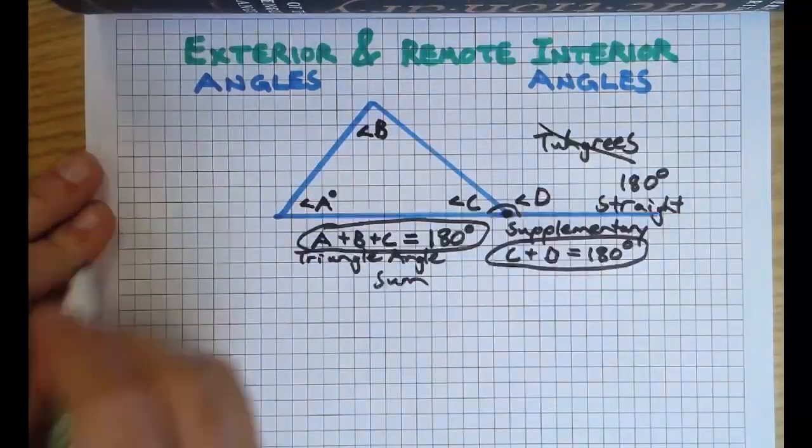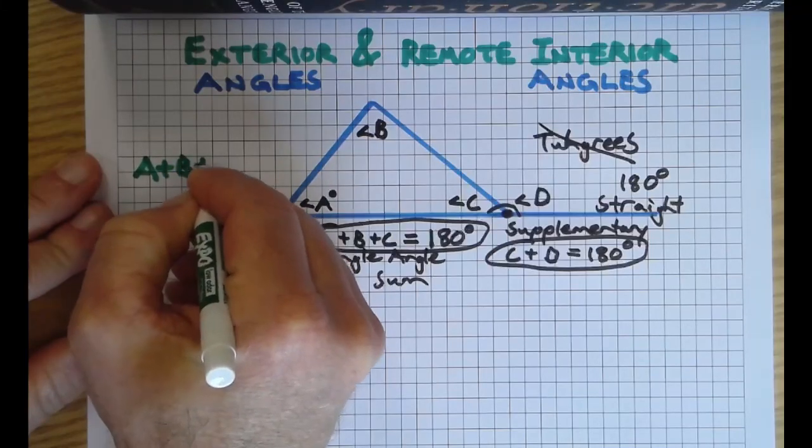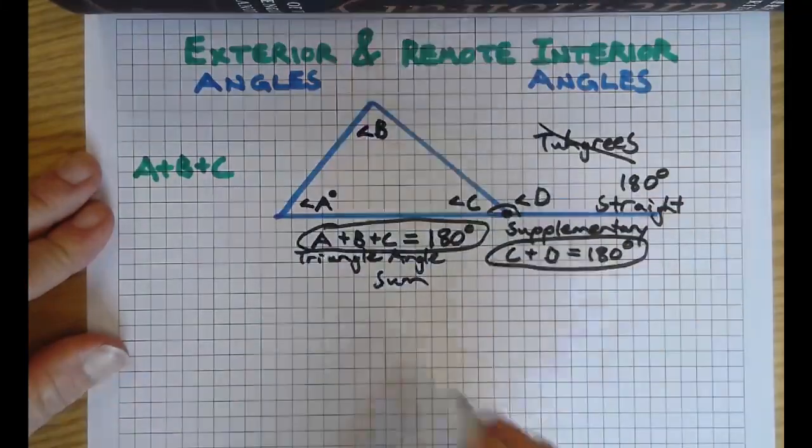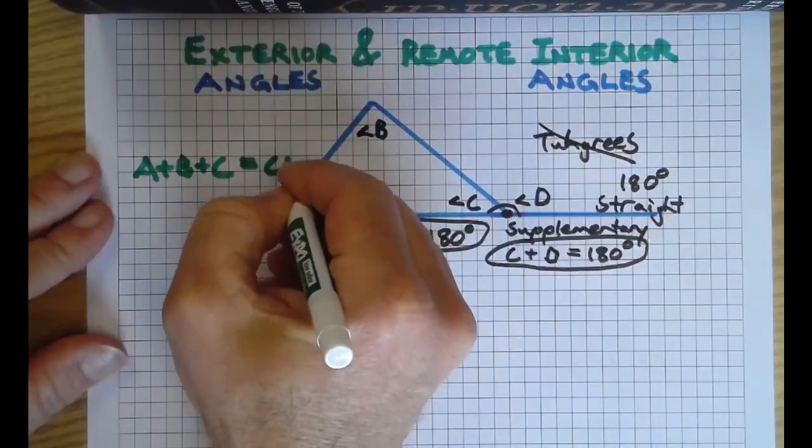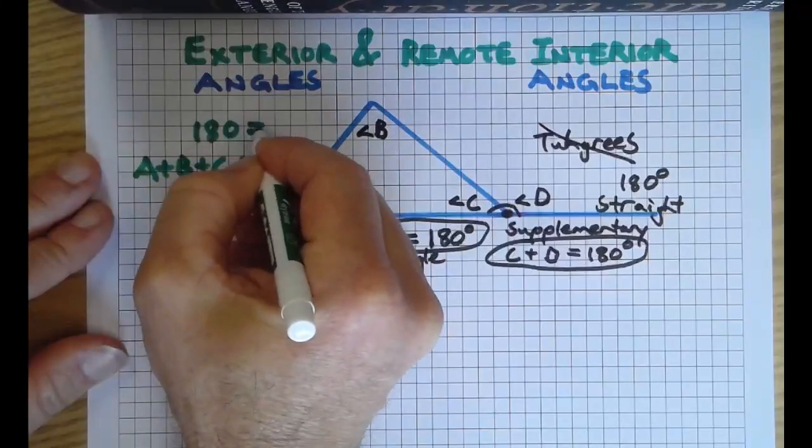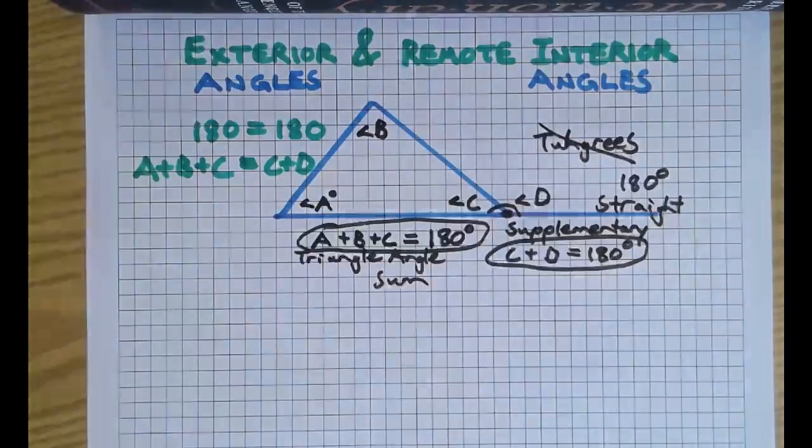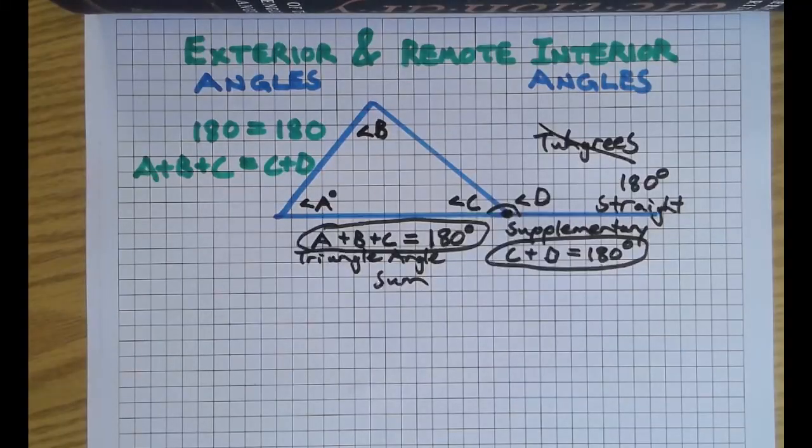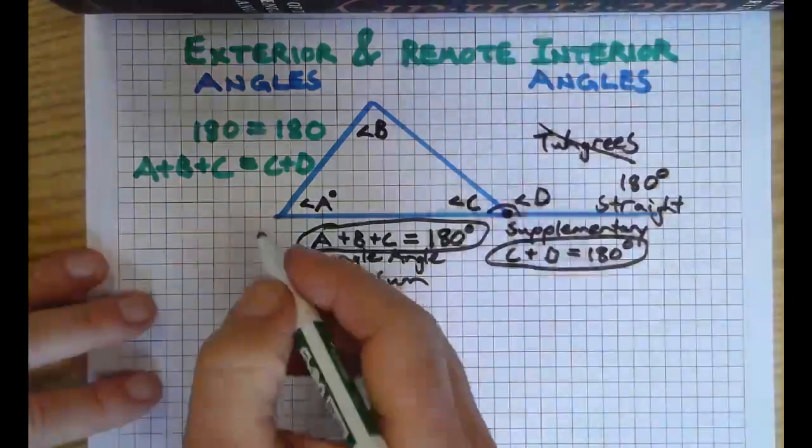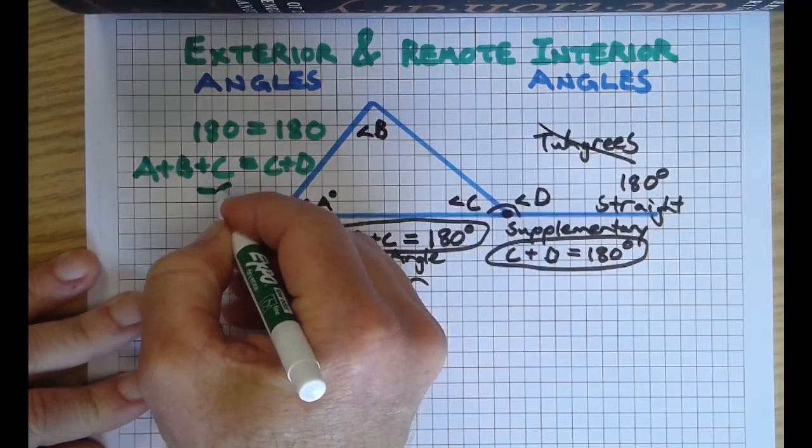It's a good time to change colors. So I'm going to go up here: A plus B plus C equals C plus D. And we know that because that equals 180 and that equals 180. Can we agree on that? Say yay if you agree.